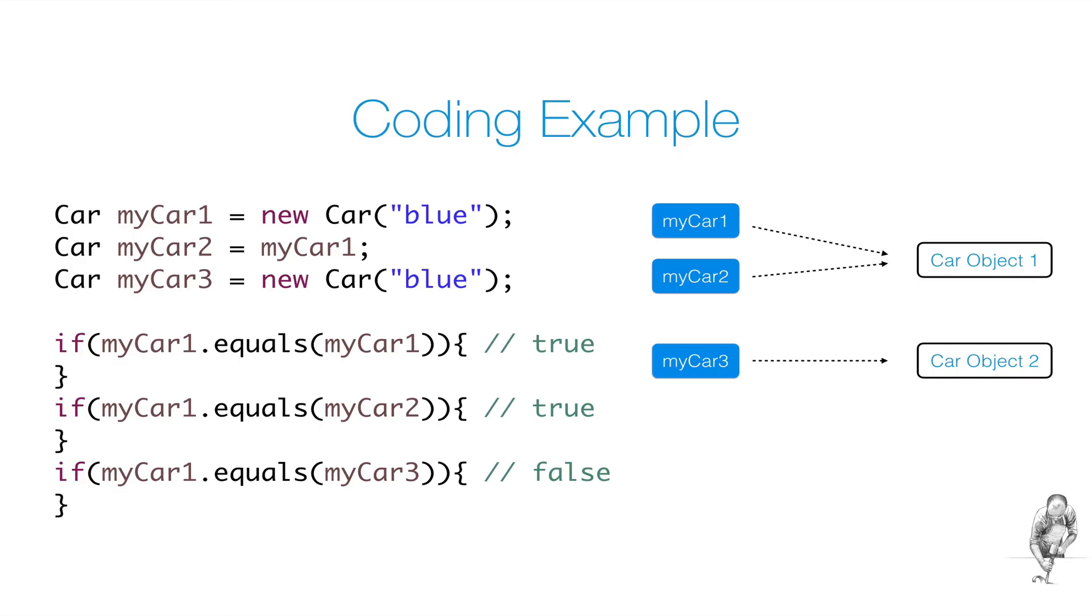Well, first of all, you have to tell your program that you consider two blue cars as equal. Because it totally depends on what you consider equal or unequal. And you have to express that in code.